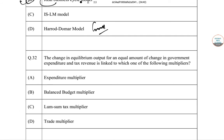Next question: change in equilibrium output ke upar sawal hai. Change in equilibrium output for an equal amount of change in government expenditure and tax revenue is linked to which multiplier? Equal change is only considered in the multiplier which gives you the value one, and among them only BBM — Balanced Budget Multiplier — is the case where the value comes as one.